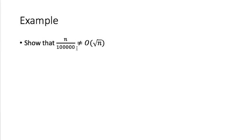Let's give an example. I claim that n divided by 100,000 is not O of square root of n. Even though this coefficient is 1/100,000 — meaning we're dividing n by a large number — it still grows faster than square root of n when n is large enough. So an algorithm with running time n/100,000 will be slower than one with running time √n for very large n.